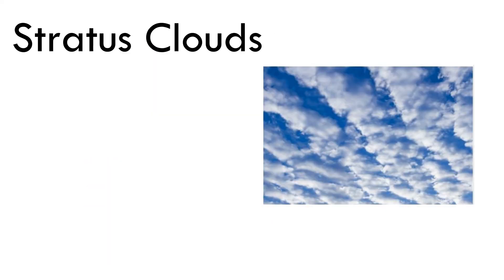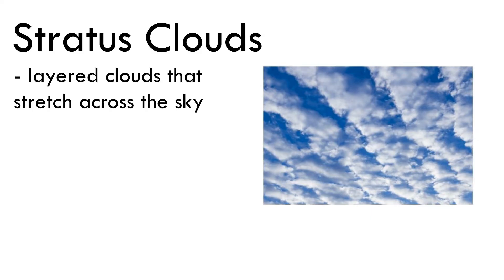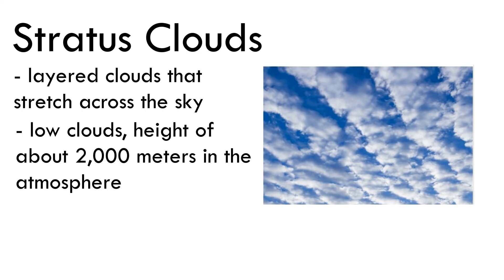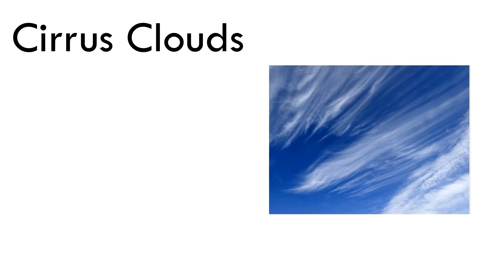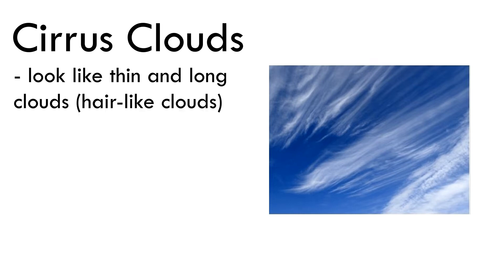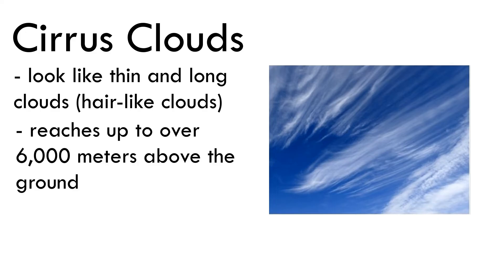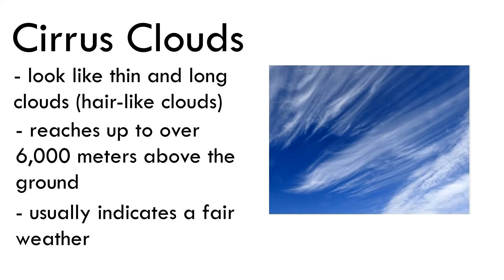Stratus clouds are layered clouds that stretch across the sky. They are low clouds at a height of about 2,000 meters in the atmosphere. Cirrus clouds look like thin, long, hair-like clouds found up to over 6,000 meters above the ground. They usually indicate fair weather.